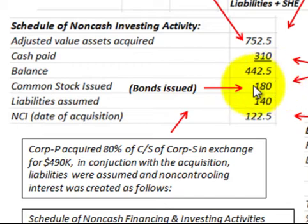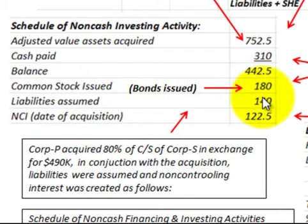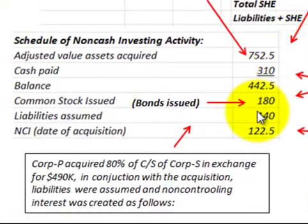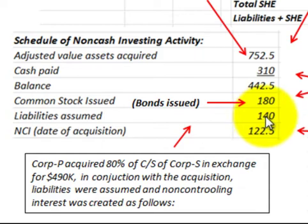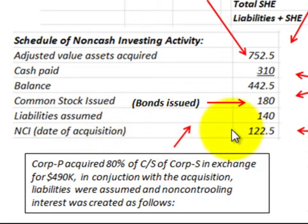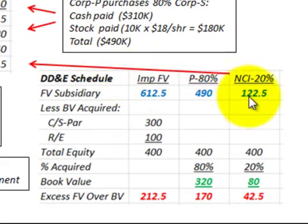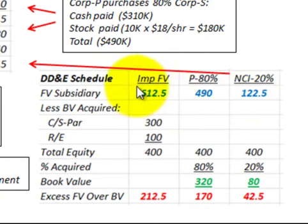Next on the schedule are the liabilities assumed, which in this case was $140,000 — obtained from the subsidiary corporation's balance sheet, where total liabilities at fair value were $140,000. Lastly, we have the non-controlling interest at the date of acquisition for $122,500, which comes from the distribution schedule at 20%, representing the NCI's portion of the implied fair value of the subsidiary when purchased.